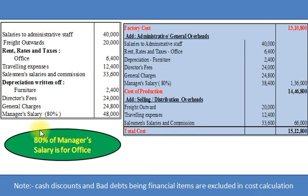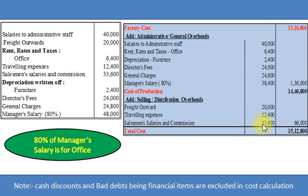In this particular sum we do not have information on opening and closing stock of finished goods, so we will not include them. Now we add selling and distribution overheads: Freight Outwards Rs. 20,000; Travelling Expenses Rs. 12,400; and Salesman's Salaries and Commission Rs. 33,600. Total Selling and Distribution Overheads Rs. 66,000. Adding to cost of production Rs. 14,46,800, we get a Total Cost of Rs. 15,12,800.